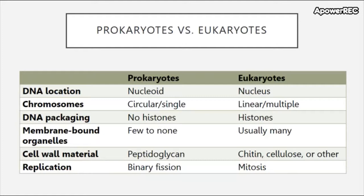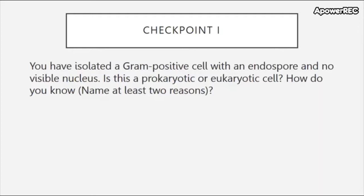So let's apply this knowledge to our first checkpoint. You have isolated a gram-positive cell with an endospore and no visible nucleus. Is this a prokaryotic or eukaryotic cell? How do you know? Name at least two reasons.